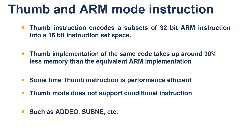We mostly use Thumb for memory-constrained systems because Thumb has higher code density than ARM. Code size is the space taken up in memory by the executable program. For memory-constrained embedded systems such as mobile phones, code density is a very important factor. On average, a Thumb implementation of the same code takes up around 30 percent less memory than the equivalent ARM implementation. Interestingly, Thumb uses more instructions even though it takes less code space — that is how the overall memory footprint is reduced.